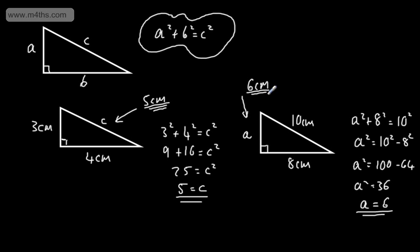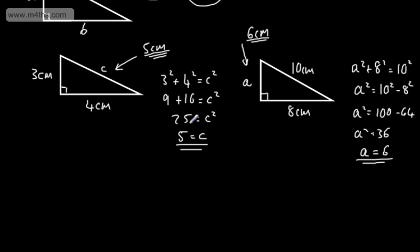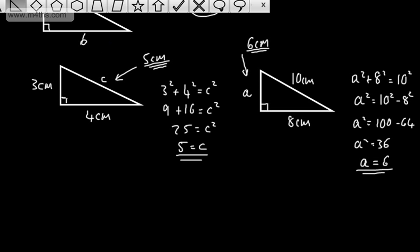These are special triangles called Pythagorean triples, as they give us whole numbers — all integer values. It won't always be the case, and we might have something a bit messier. All we'll do is use a calculator for those examples. These first examples are ones you might see on a non-calculator paper.